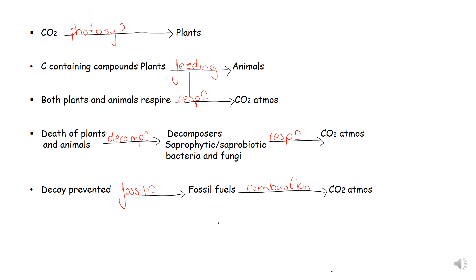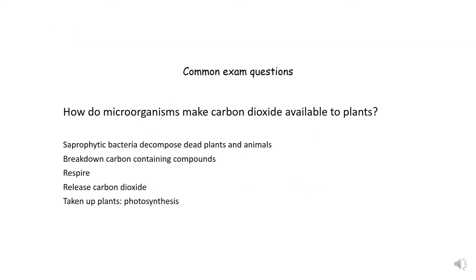Let's have a quick look at a common example question: how do microorganisms make carbon dioxide available to plants? Marking point one: saprophytic bacteria decompose the dead plants and animals. Marking point two: they break down the carbon-containing compounds. Marking point three: they respire, or respiration. Marking point four: this releases carbon dioxide. And marking point five: this carbon dioxide is taken up by plants via photosynthesis.